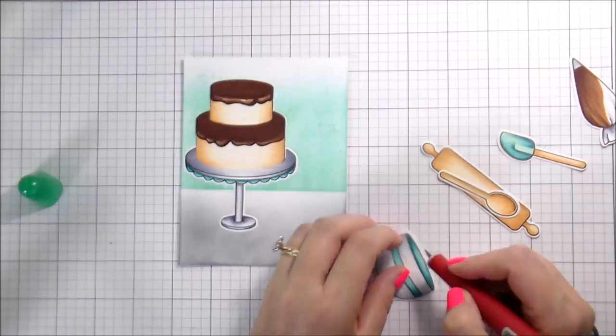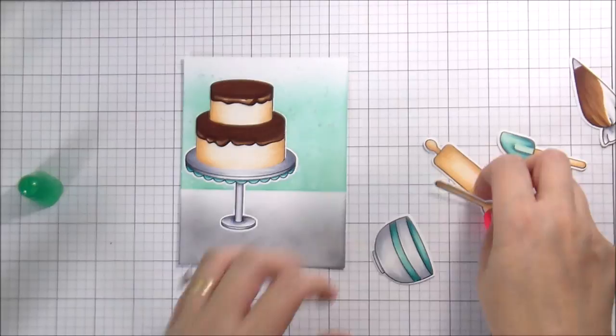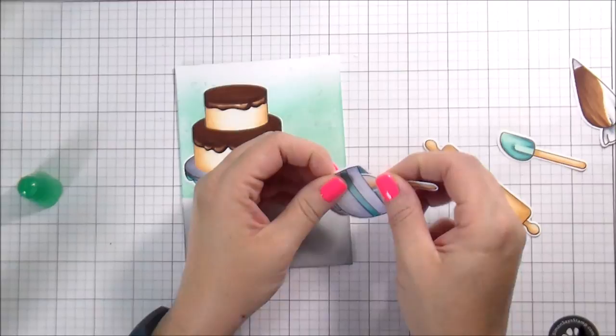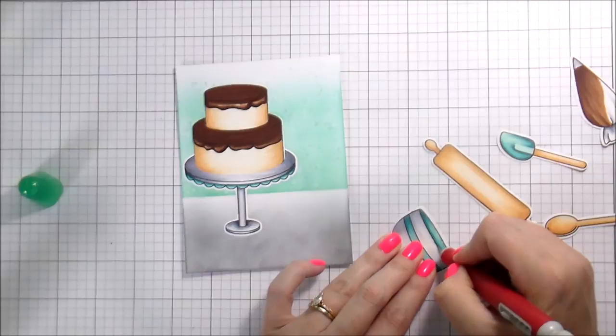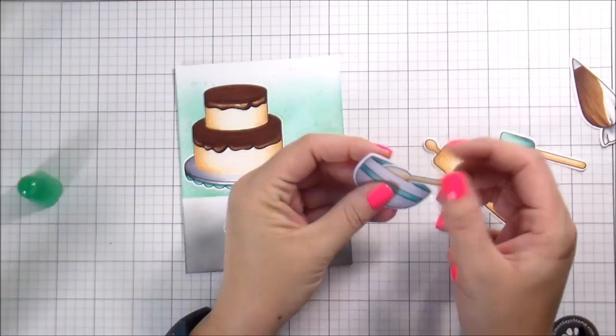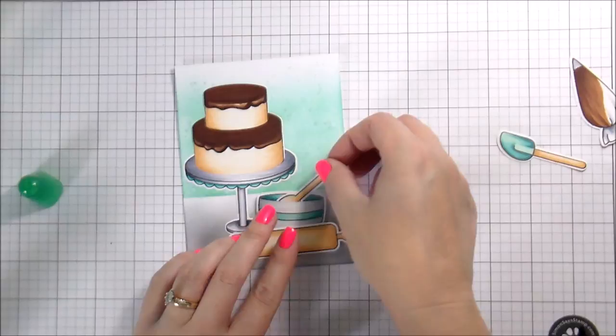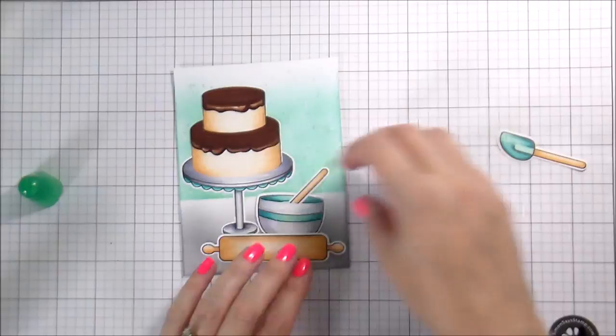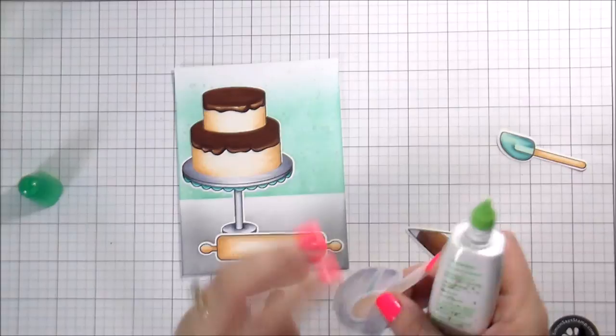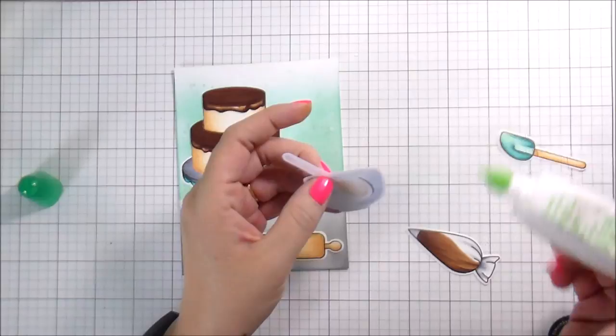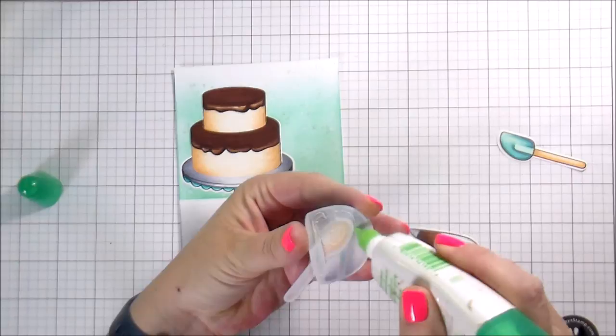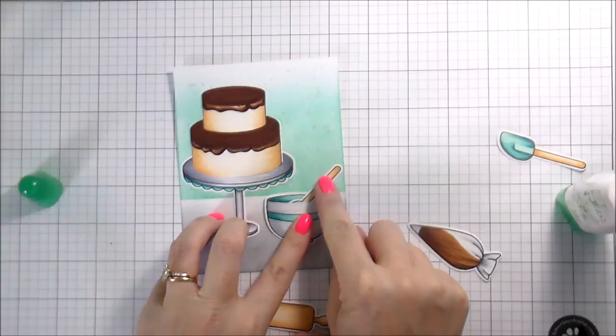So once everything's been run through the die cut machine, my Spellbinders Platinum, now I'm just going to start adhering them. I chose not to pop any of them up onto foam tape. I just kind of layered them on top of each other, which gave me some height anyway. But mostly they were just glued flat. I did add foam tape, which you'll see when I do my sentiment. But look at that frosting. Look how good that looks. Like there's no, like none of that little white outline. And then it looks so good. I just, I was super happy with the way that it came out.